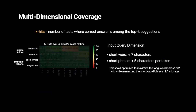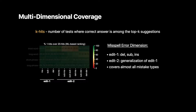In our paper, we specify the coverage dimensions. On one hand, we have the input string dimension — considering different token lengths and character lengths. The other dimension is the typo dimension, defined by string edits. The columns span all possible error patterns within edit distance 2, which covers more than 95% of the typos in practice.